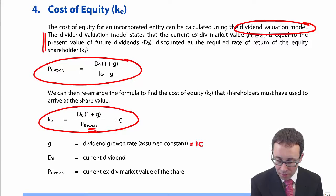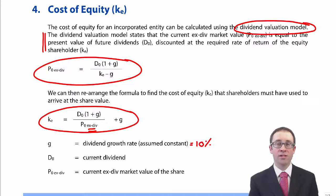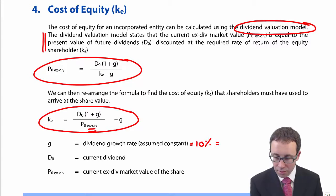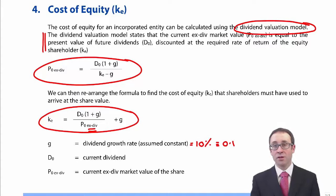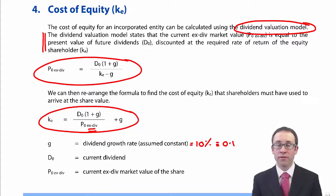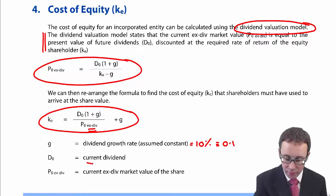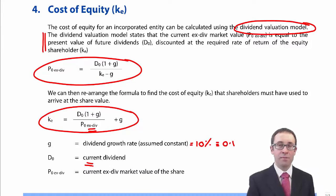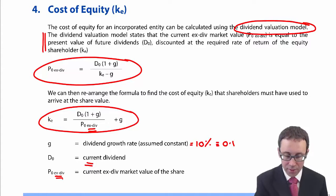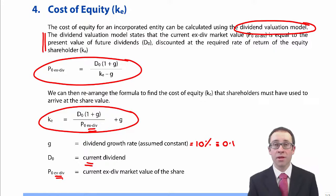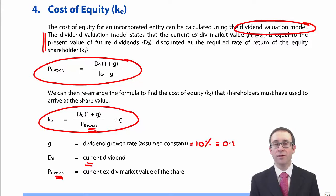D0 is the current dividend — the dividend paid today. Remember that P0 is the XDIV price, which is important. Ultimately, all you need to do is remember the formula: the formula for the price and the formula for the cost of equity. The important one of the two is the cost of equity. If you wish, have a go at the example and then watch the next video, which takes you through that example.